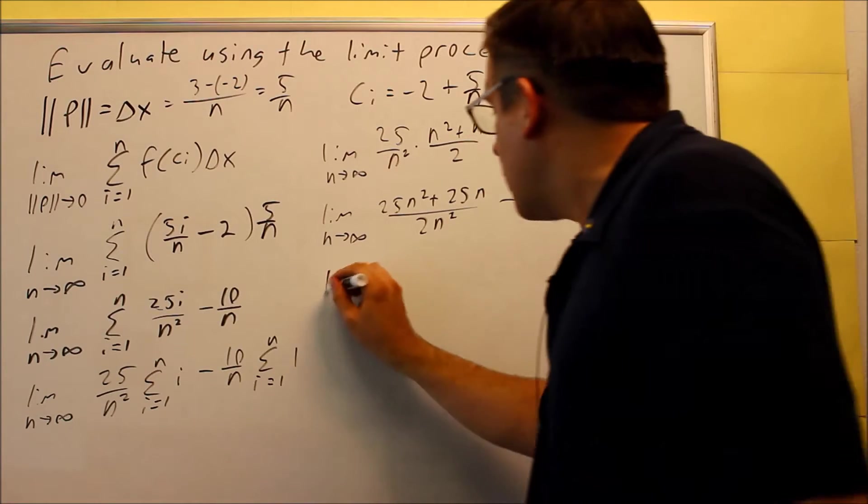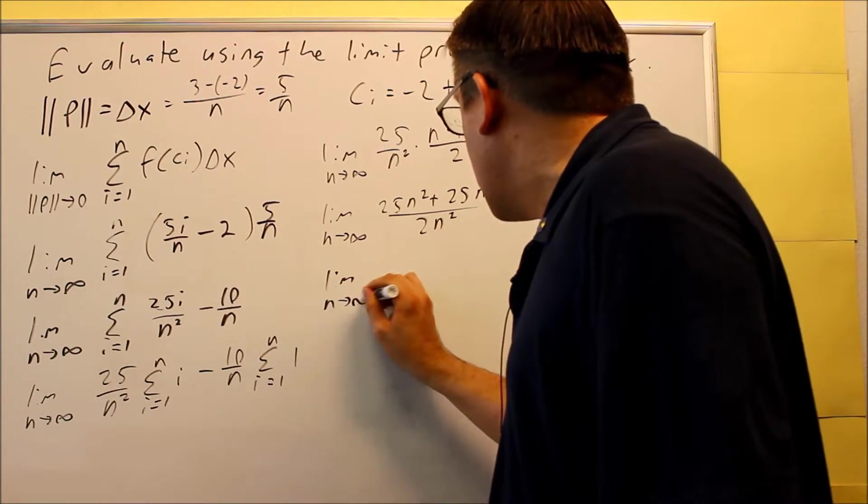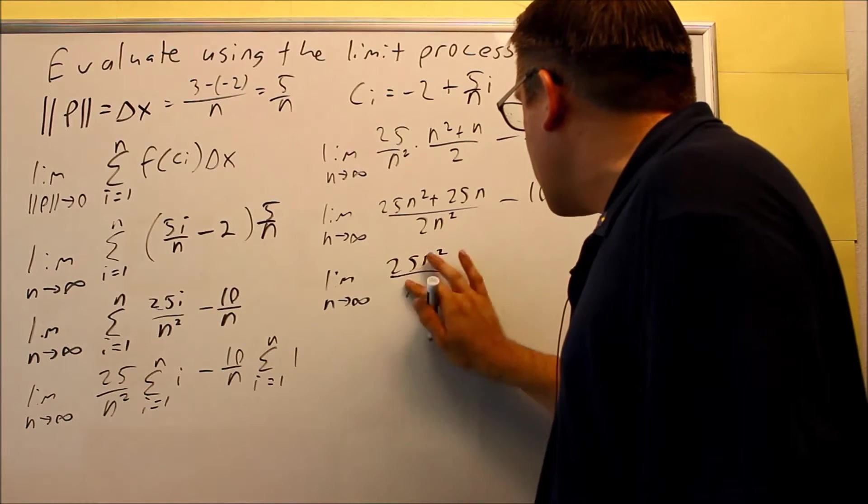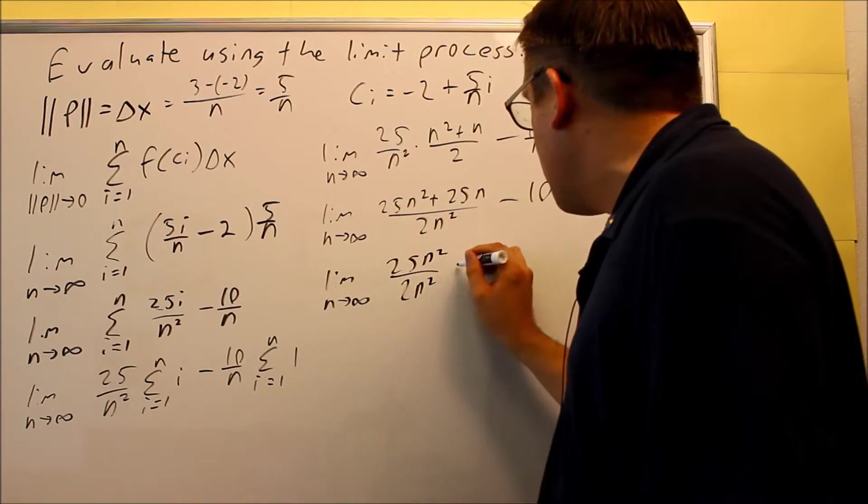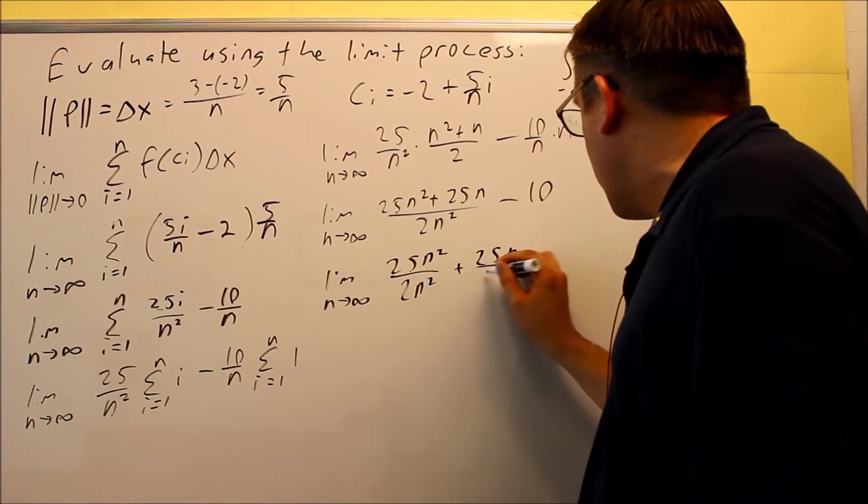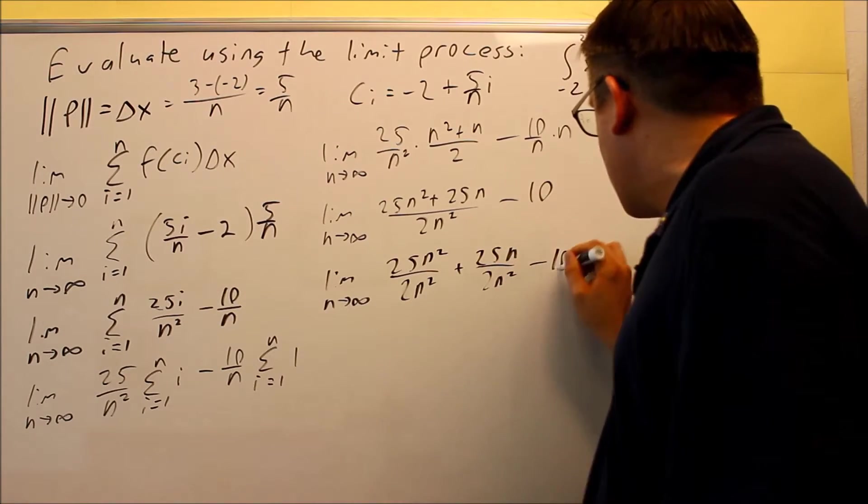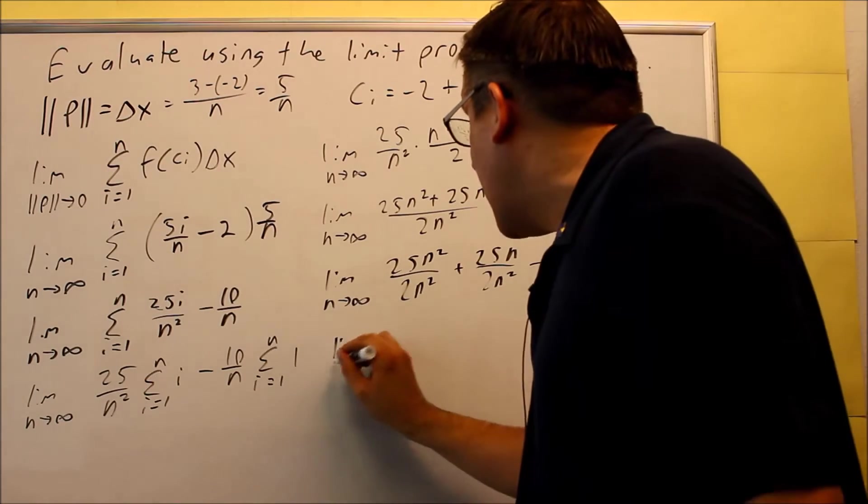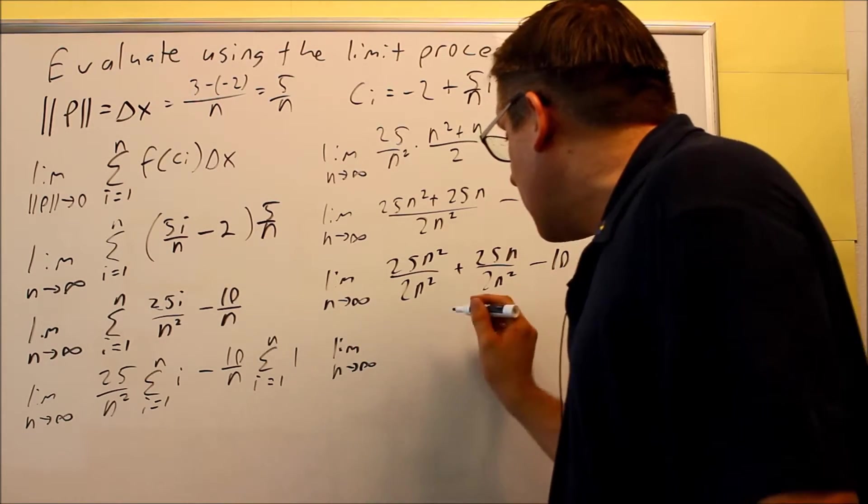This, I want to break this up as much as possible. So, I'm going to do limit, n goes to infinity, 25 n squared over 2 n squared. I'm going to break this up. Plus 25 n over 2 n squared minus 10. So, I'm splitting up the fraction, reduce each of these. And then, finally, I can take my limit and get the answer.